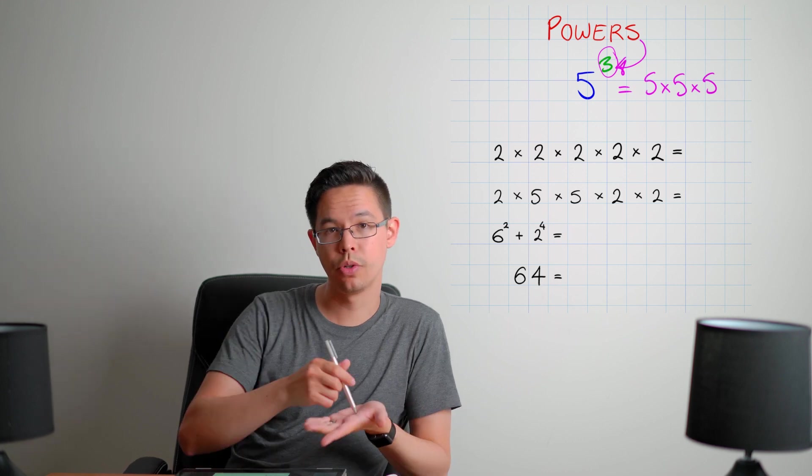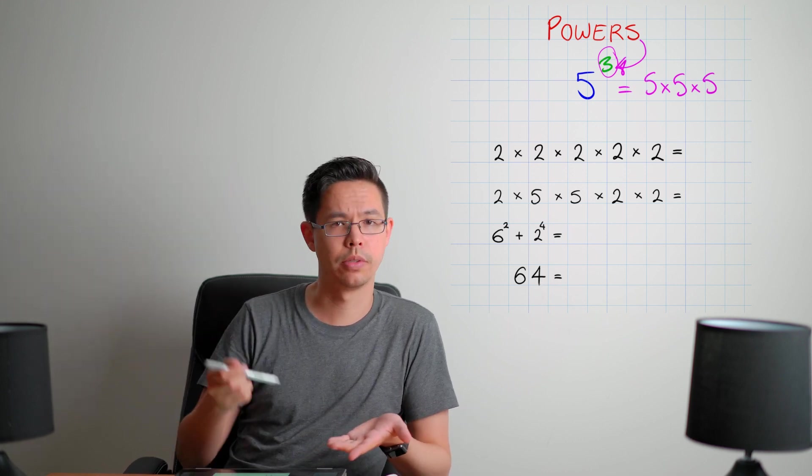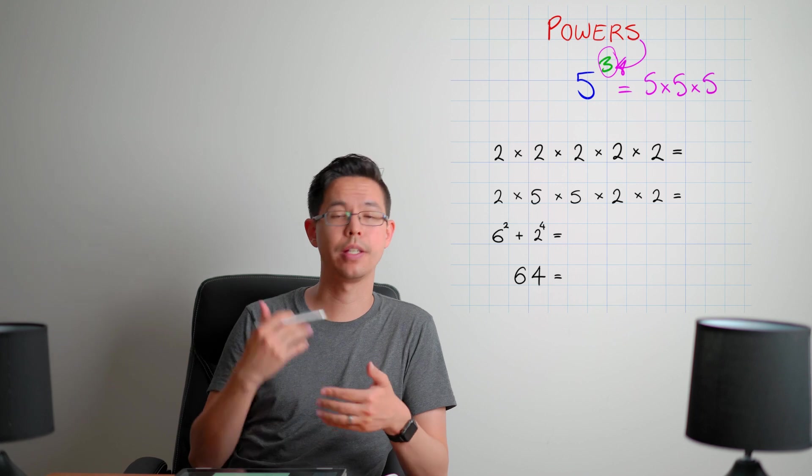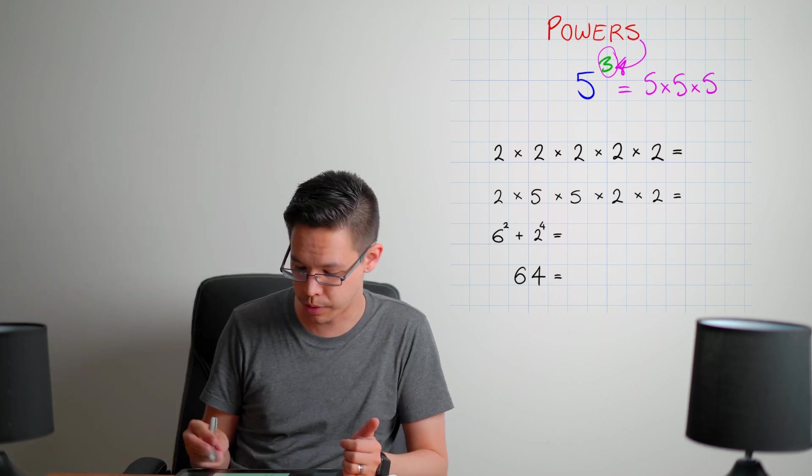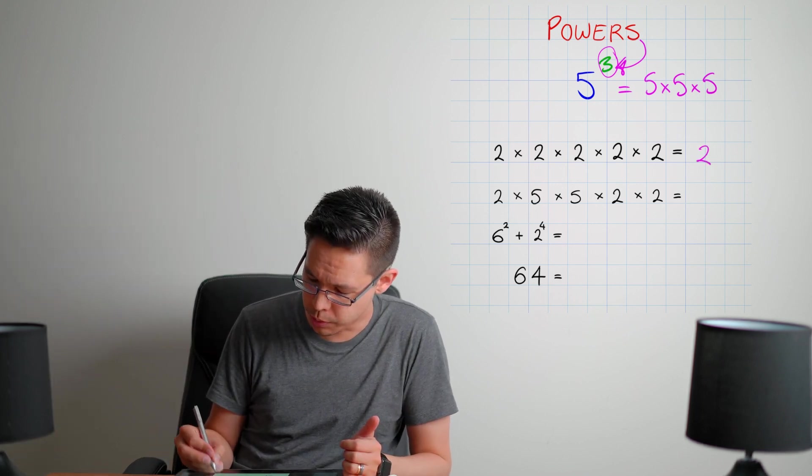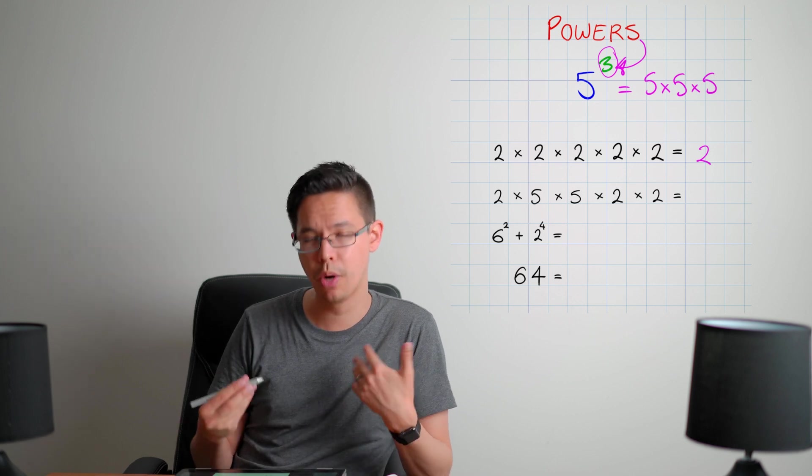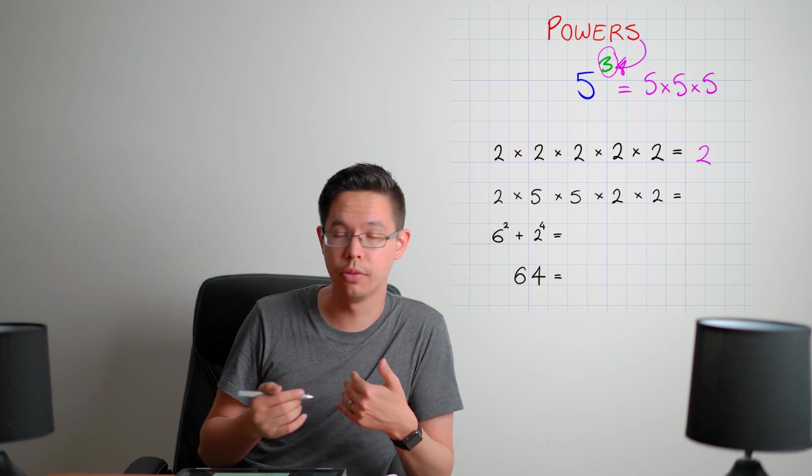So here I've got a sequence where I've got two times by itself over and over and over again. Wouldn't it be great if we could shorten that? Yes, we can. We can shorten that using powers. So I can say this whole sequence is equivalent to two to the power times itself a certain number of times.